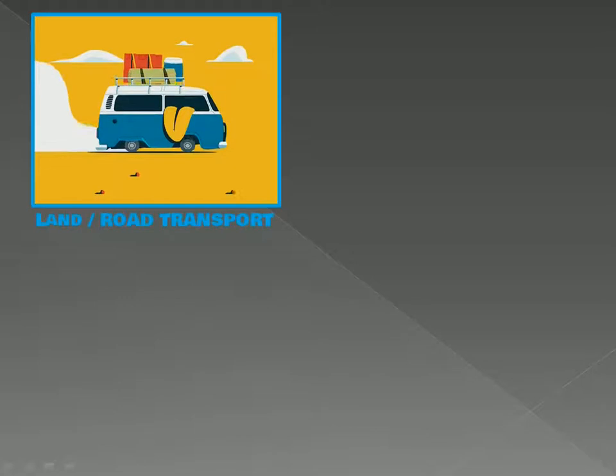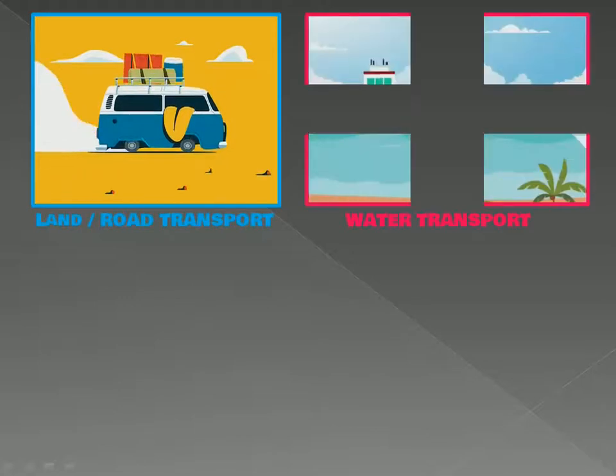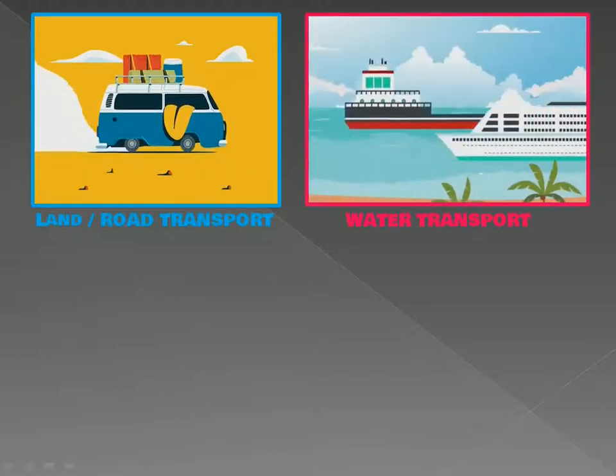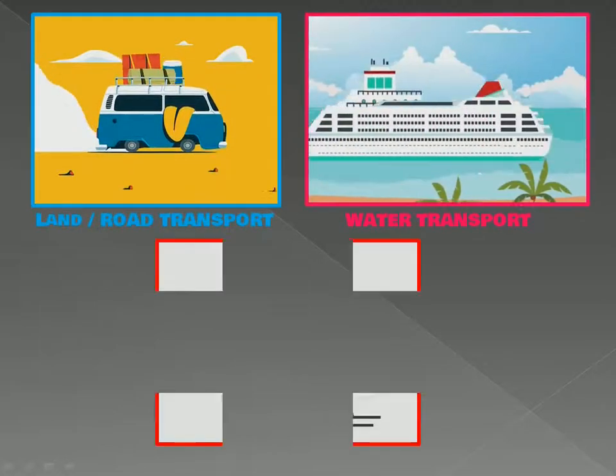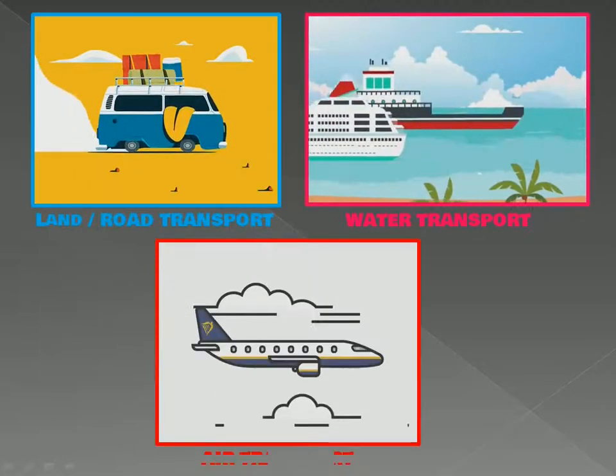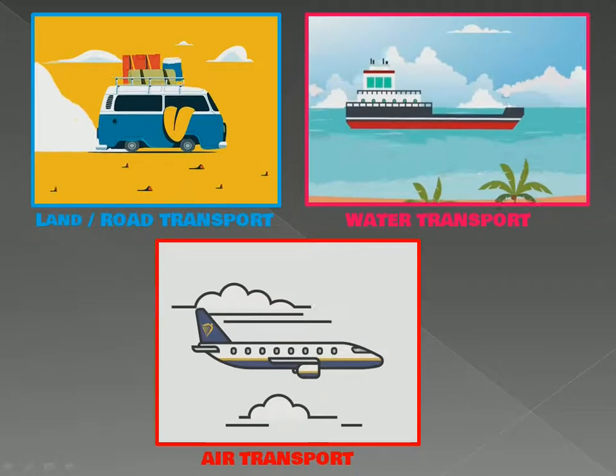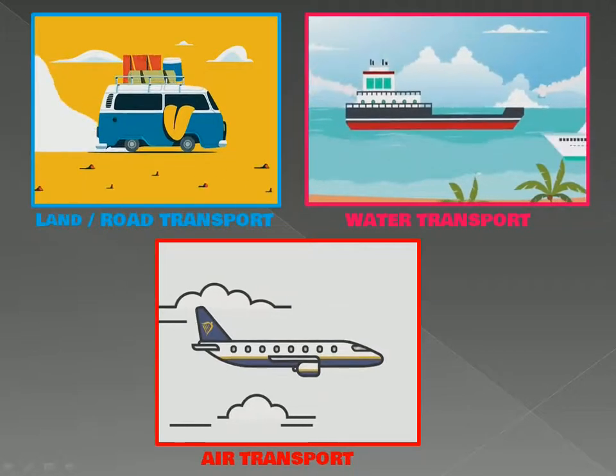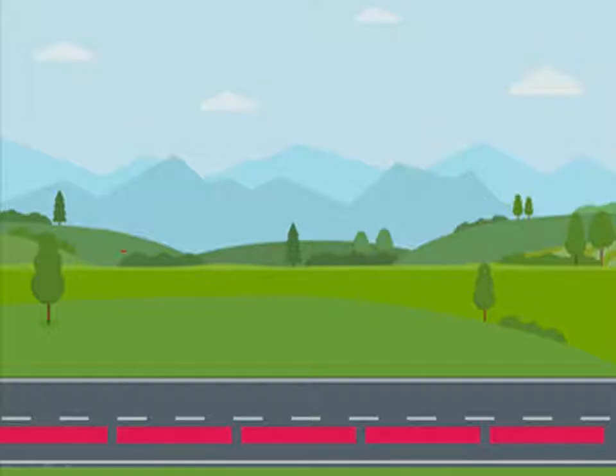There are three means of transport: 1. Land or road transport. 2. Water transport. 3. Air transport. Let's discuss one by one.